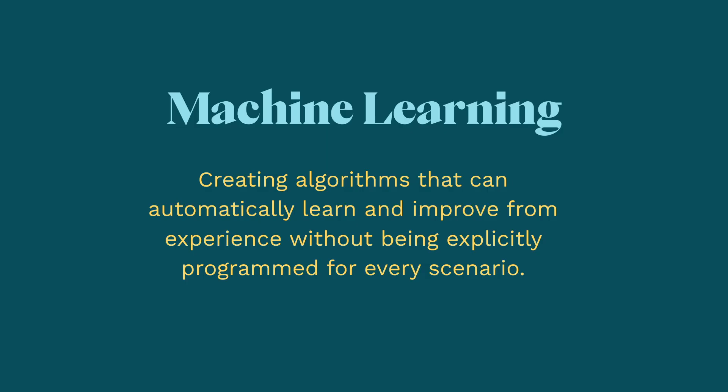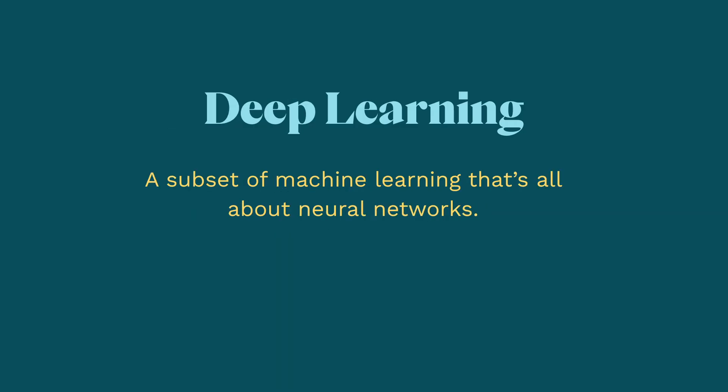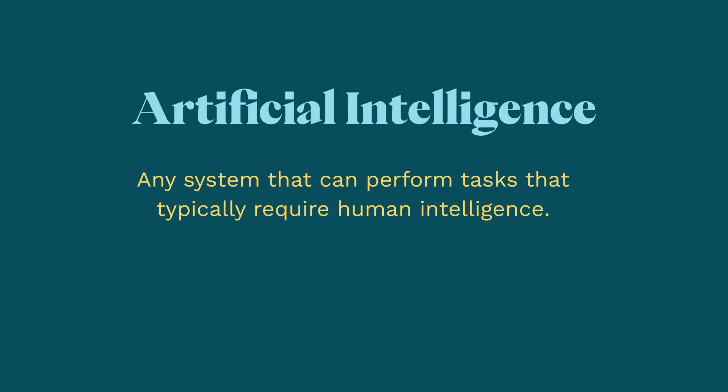So let's summarize what we've learned. Machine learning is about creating algorithms that can automatically learn and improve from experience without being explicitly programmed for every scenario. Deep learning is a subset of machine learning that's all about neural networks. And finally, there's AI, which is any system that can perform tasks that typically require human intelligence. And there you have it — maybe not so easy. You might be left with more questions than answers, and that's okay — that's why we have a comment section. These are just broad overviews of these topics, and there is so much to dive into. So if you want me to pick apart any of this in particular, please let me know in the comment section below. Thank you all so much for watching, and I'll catch you in the next video.